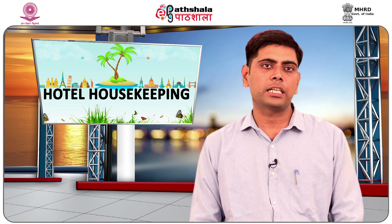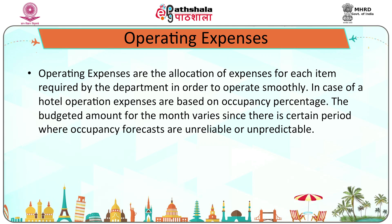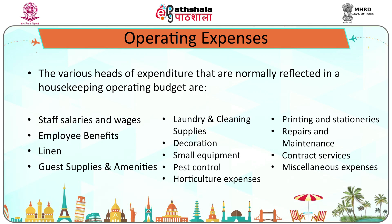Operating expenses are the allocation of expenses for each item required by the department to operate smoothly. In a hotel, operating expenses are based on occupancy percentage, and budget amounts for the month vary since occupancy forecasts can be unreliable or unpredictable. The various heads of expenditure normally reflected in a housekeeping operating budget are: staff salaries and wages, employee benefits, linen, guest supplies and amenities, laundry and cleaning supplies, decorations, small equipment, pest control, horticulture expenses, printing and stationeries, repairs and maintenance, contract services, and miscellaneous expenses.